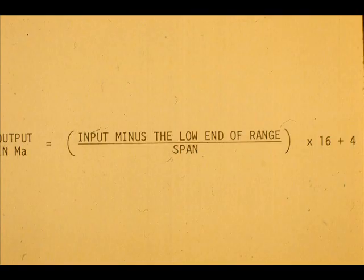These four different transmitter ranges have the same 200 PSIG span. Note that the 0, 25, 50, 75, and 100% of span inputs have the same milliamp output for each range.